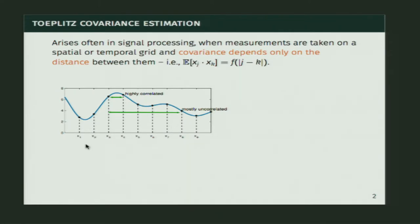This might seem like an artificial constraint — why do we care about this? Estimating Toeplitz covariance matrices comes up a lot in signal processing applications. It comes up when the covariance between samples depends on the distance between them. For example, in signal processing you have some signal coming in and you're reading it at discrete points. Two points that are next to each other are very highly correlated if it's a smooth signal, while two far-away measurements have a lot less correlation. So the covariance between measurement j and k is some function of the distance between j and k, which leads to Toeplitz structure.